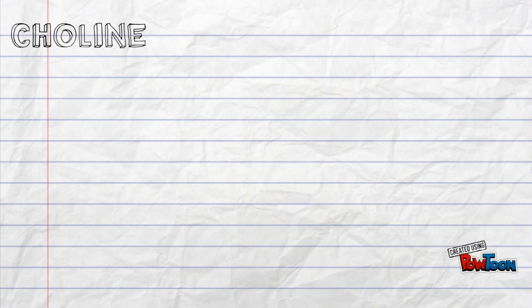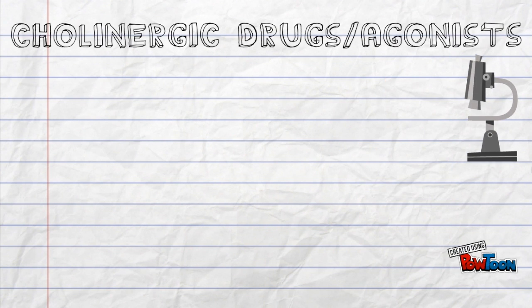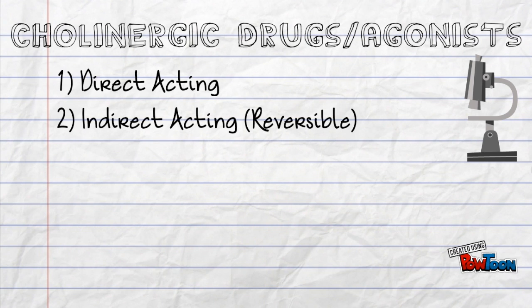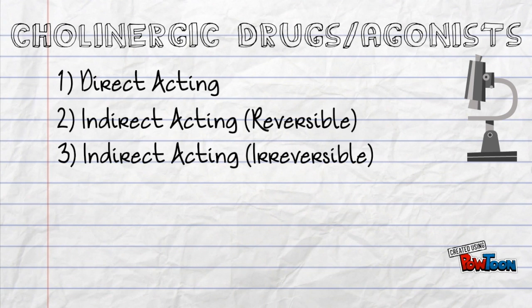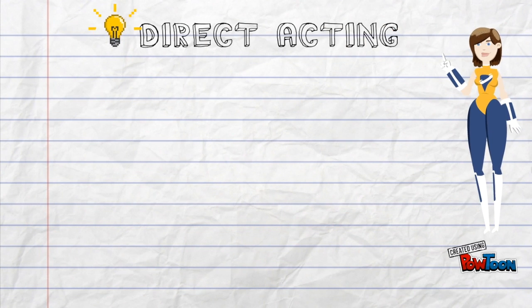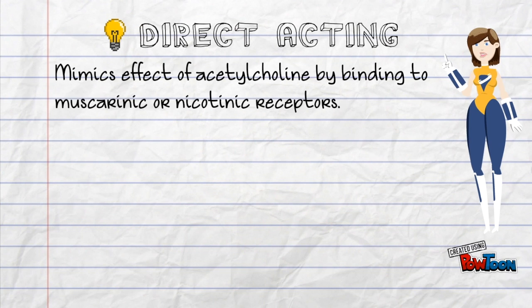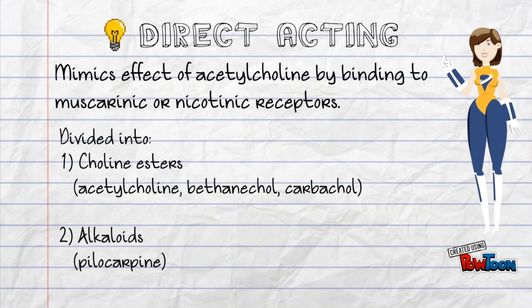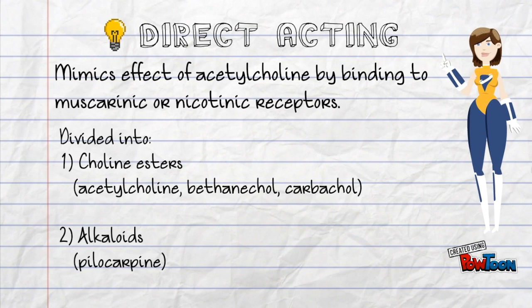Cholinergic drugs can be divided into three categories: direct acting, indirect acting reversible, and indirect acting irreversible. For direct acting drugs, they mimic the effects of acetylcholine by binding to muscarinic or nicotinic receptors. They are divided into choline esters and alkaloids.